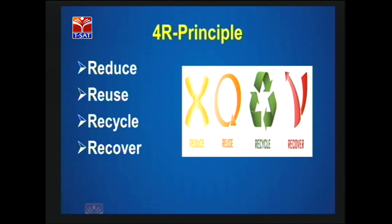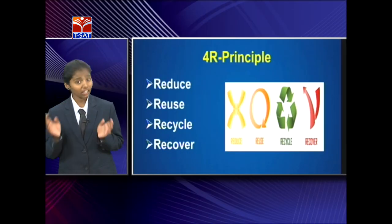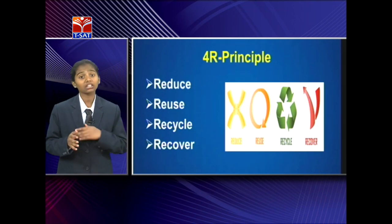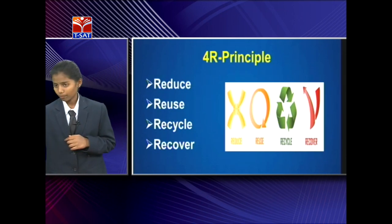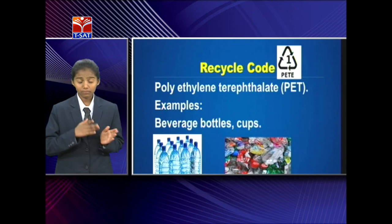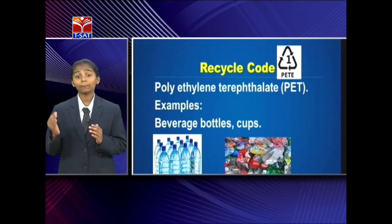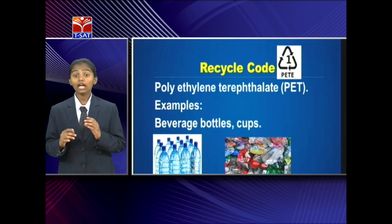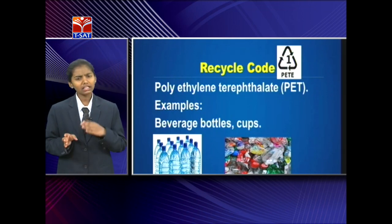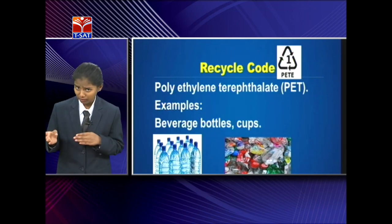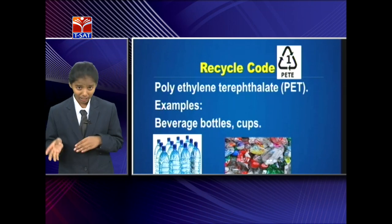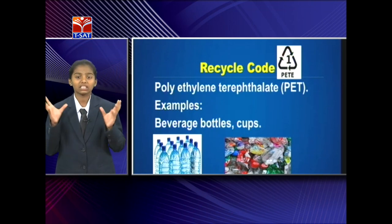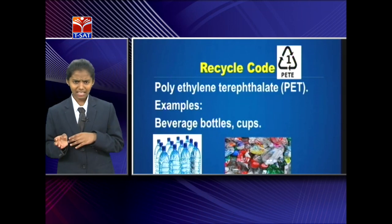The solution to these problems is the 4-R principles: reuse, reduce, recycle, and recover. When you observe a plastic material, at the bottom there is a triangle symbol with a number from 1 to 7 and a set of letters, which shows the chemical composition of the material.